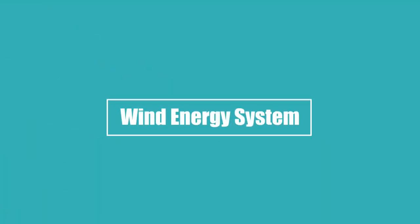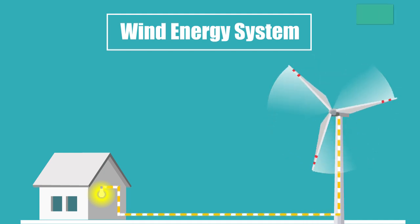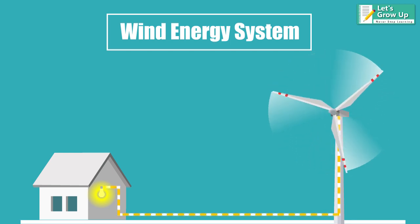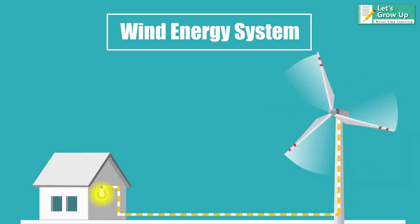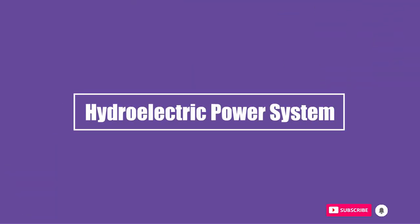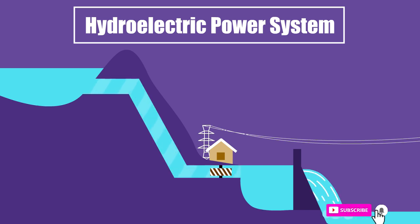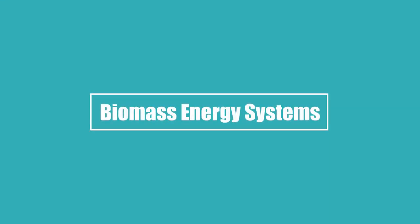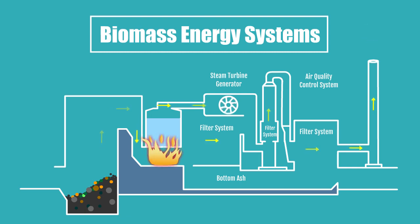Wind energy system: these systems use wind turbines to convert the wind's kinetic energy into mechanical electrical power, which is then converted to electricity using motors and generators. Hydroelectric power system: these systems use the force generated by fast-flowing water to spin the turbine blades of a generator, which in turn generates electricity.